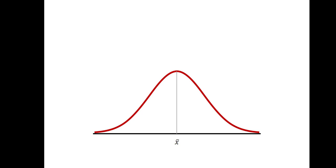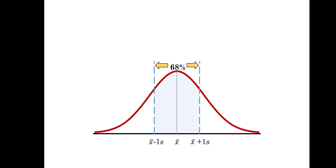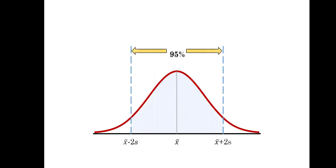Because our distribution is symmetrical, when we cut across the middle we have approximately 50 percent of the data on either side. Within one standard deviation of the mean we have 68 percent, so on either side of the mean we have 68 divided by 2, which gives us 34 percent from the mean to each standard deviation above and below. For two standard deviations the area is 95 percent, so from the center to two standard deviations above and below, by symmetry we have 47.5 percent on each side.